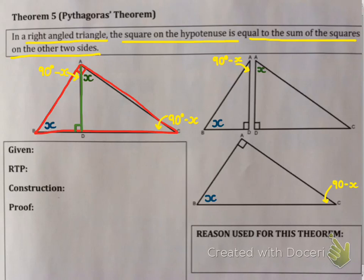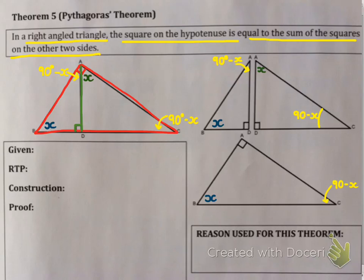So I fill in angle C in both of my triangles. Now this is the key part: look at these three triangles — each of them has 90 degrees, an X, and a 90 minus X, which means they are equi-angular. As soon as I say they're equi-angular, Theorem 3 says that any two triangles that are equi-angular have their sides in proportion and the triangles must be similar. So I have three similar triangles here.